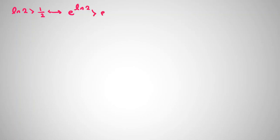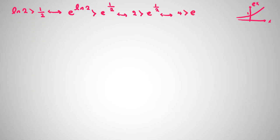Let's prove ln 2 is greater than one-half. This is equivalent to showing e to the power of ln 2 is greater than e to the power of one-half, because e is greater than 1 and e to the x is an increasing function. Now, e to the ln 2 equals 2, so we want to prove 2 is greater than e to the one-half. Squaring both sides, that means 4 is greater than e. Since e is approximately 2.7, this is correct.